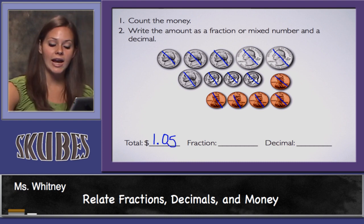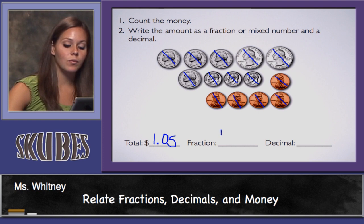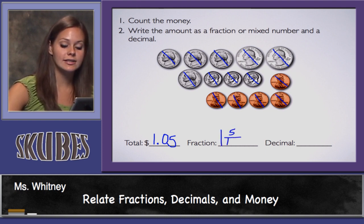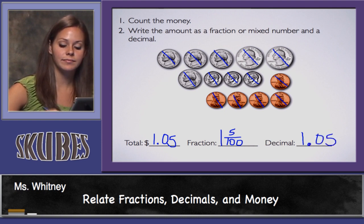To write this as a fraction it's going to be a mixed number — I have 1 whole and 5 hundredths. If I write this as a decimal, I write 1 and 5 hundredths.